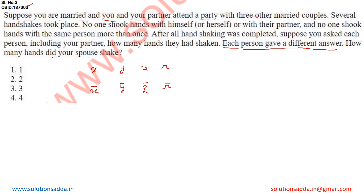The question is: how many hands did your spouse shake? Let's solve this. Consider X — X will not shake hands with himself or with his wife, so X can shake hands with Y, Z, R, R̄, Z̄, and Ȳ. Total handshakes done by X equals 6.